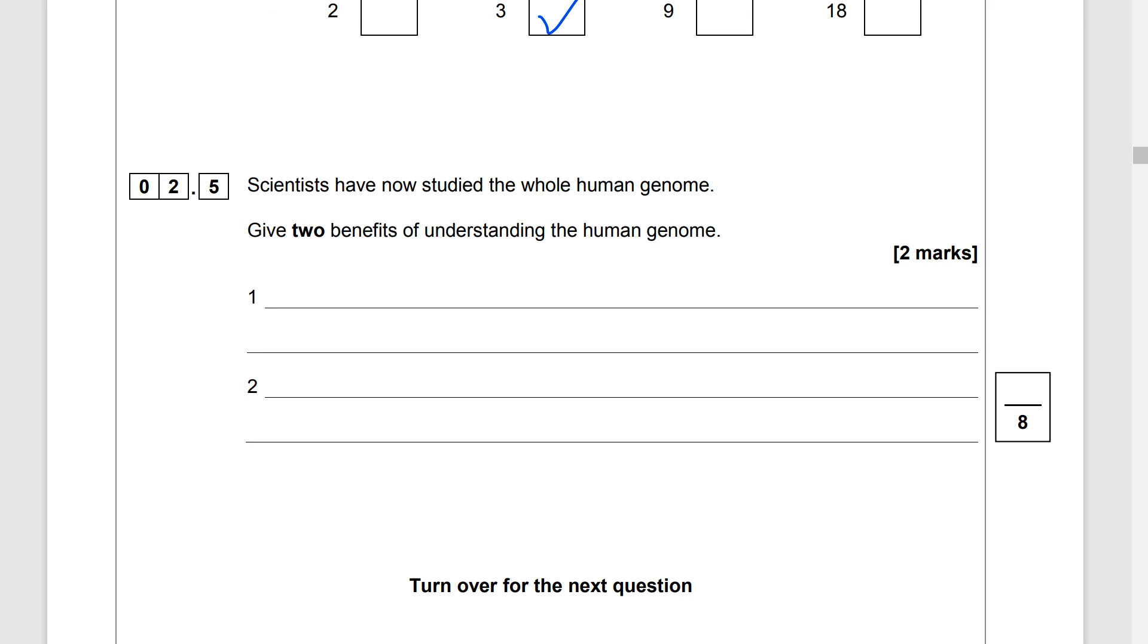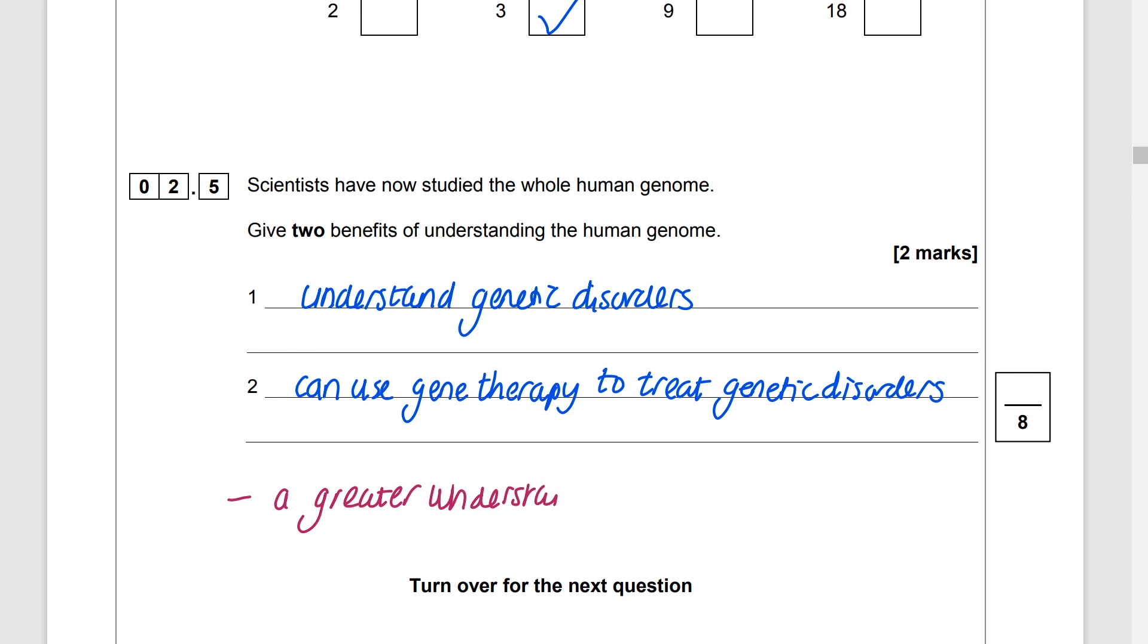Scientists have now studied the whole human genome give two benefits of understanding the human genome. Well the list is enormous and I think the best thing to do with these kinds of questions is stick with the specification so if we go for the understand genetic disorders can use gene therapy to treat genetic disorders and you only have to write two but another one possibility that I might put there is a greater understanding of human evolution but there are so many more.